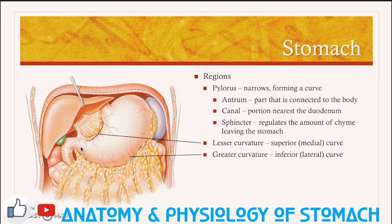The pylorus itself has two regions, the antrum and pyloric canal. The pyloric antrum is just the portion that is connected to the body of the stomach, and the pyloric canal is the portion closest to the small intestine.